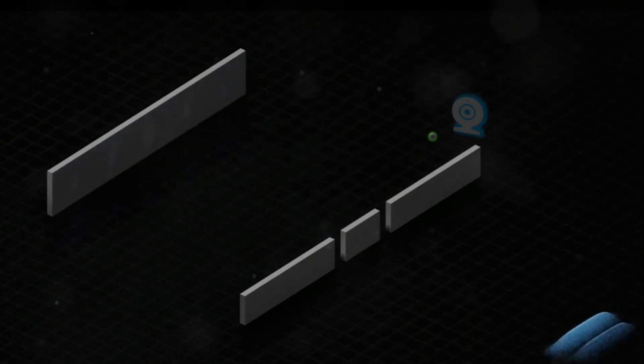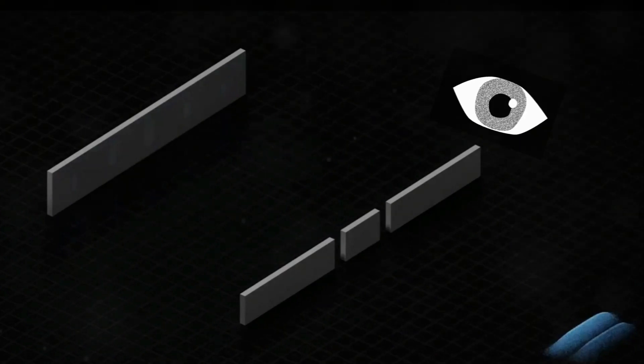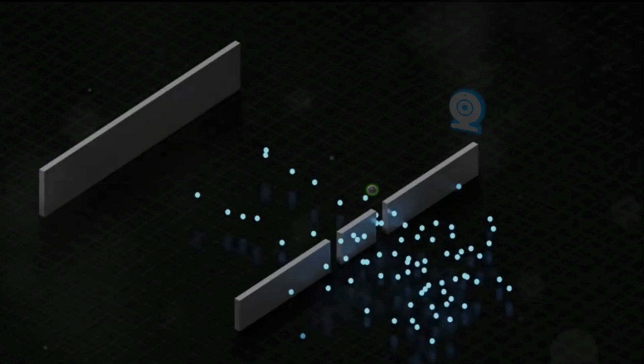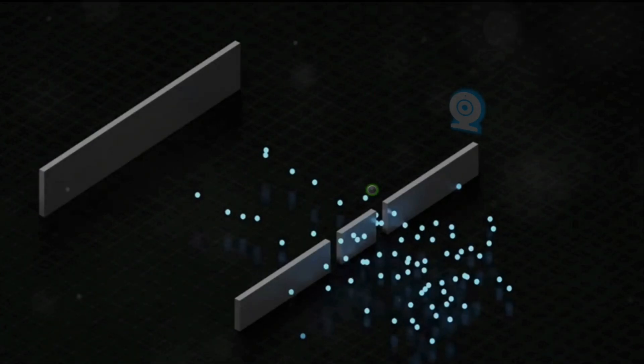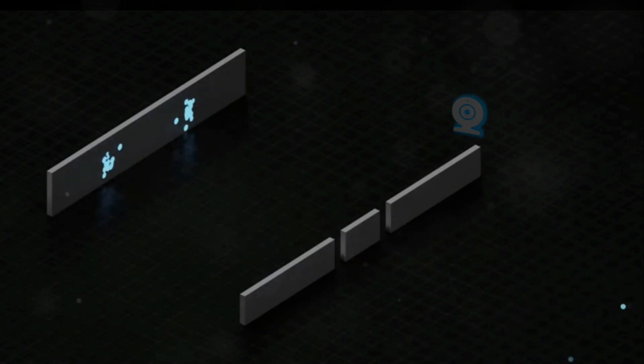To explain this more clearly, in order to determine which slit a photon passes through, you can't just look at it from afar. You have to interact with it by bouncing another photon off it using a detector. This interaction forces the quantum system to choose a definite state.